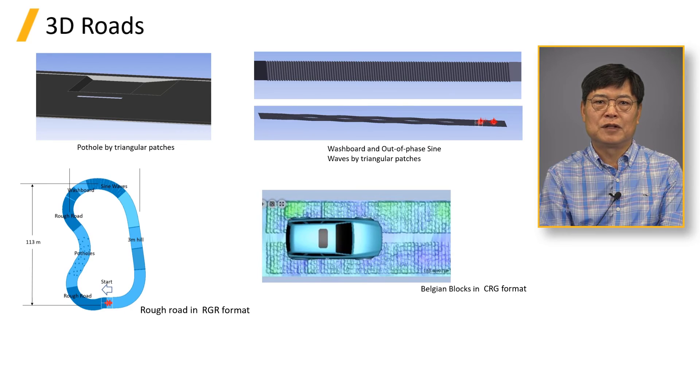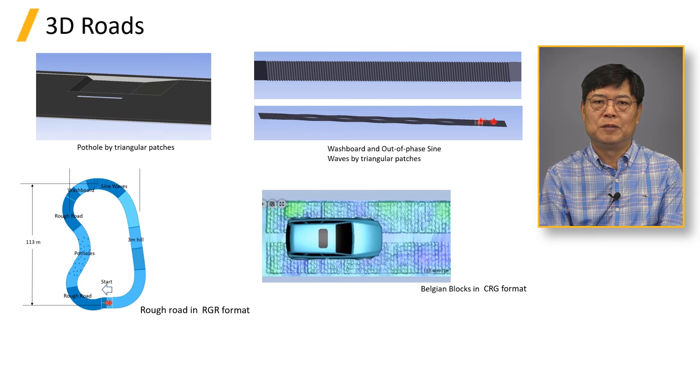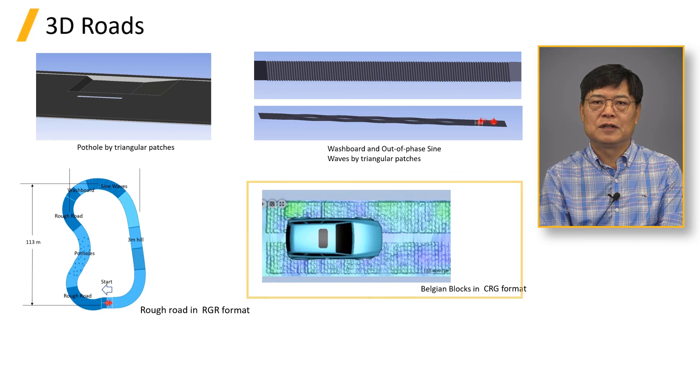Even if you don't have a CAD model for the road surface, you can hire a road scanning company to build the road in CRG, which is called regular grid format. For F-Tyre users, road profile can be converted to RGR for F-Tyre simulations. The rough road track was built in RGR format. The Belgian blocks on the right-hand side is in CRG format.